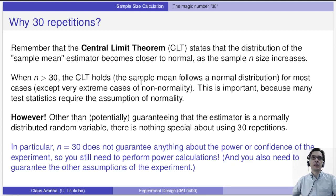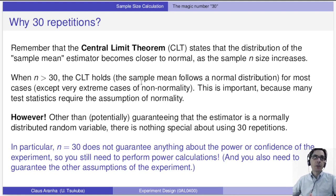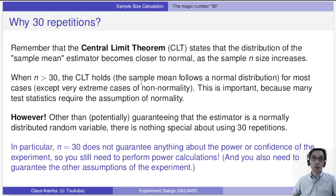Remember that in the second class we talked about the Central Limit Theorem (CLT). It states that the distribution of a sample mean estimator becomes closer to normal as the sample size n increases. When n is bigger than 30, the CLT holds, which means the sample means follow a normal distribution for most cases, except some very extreme cases of non-normality. This is important because many test statistics require the assumption of normality.